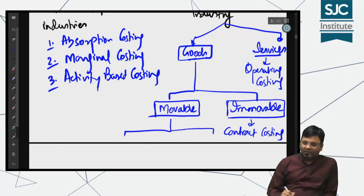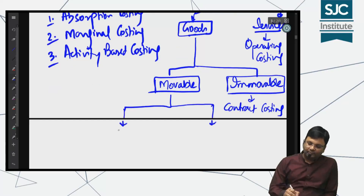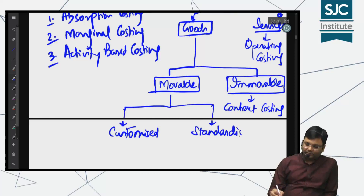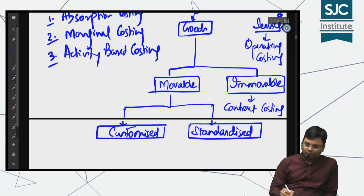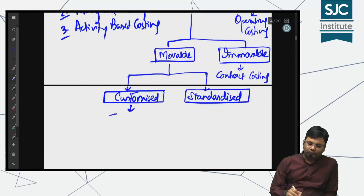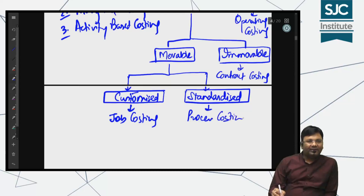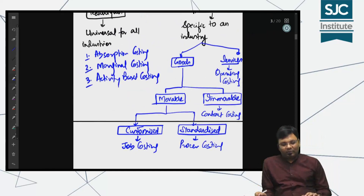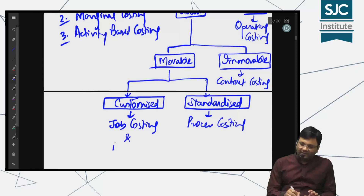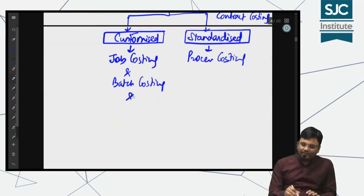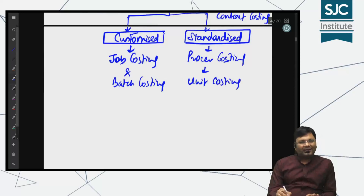Movable में दो नाम आते हैं — एक customized, दूसरा standardized। Customized में है job costing और standardized में है process costing — यह आगे आपके chapters के ही नाम हैं। अगर bulk में बनाते हो तो इसी के साथ जुड़ जाता है batch costing। Batch costing तब आता है जब आप bulk में बनाते हो। जब आप एक-एक unit करके बनाते हो तो उसका नाम आता है unit costing, जो process costing को support करता है।